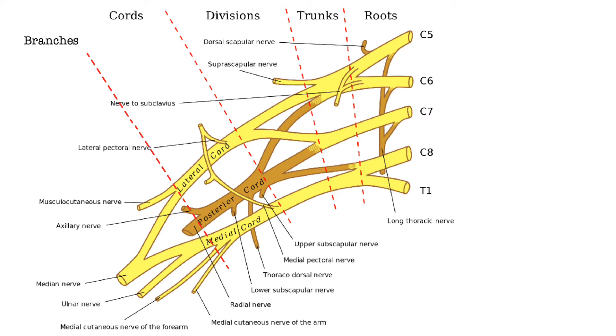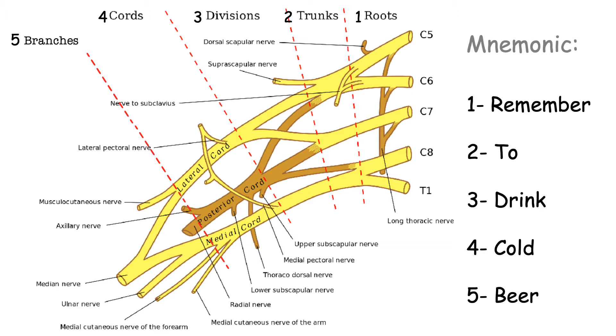So first thing that we can see is that you can divide the brachial plexus into roots, trunks, divisions, cords and branches. A good mnemonic to remember these divisions is remember to drink cold beer.